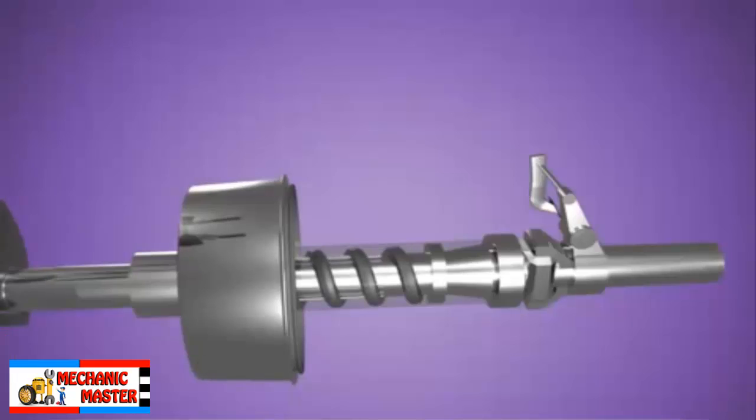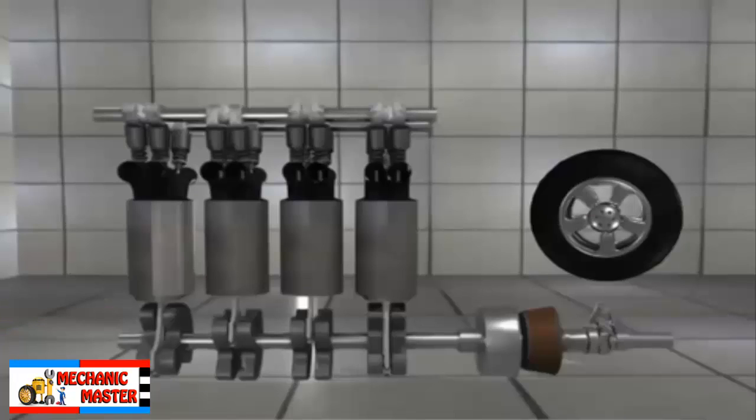The cone clutches are loaded by spring. Hence, the power is transmitted from the engine to the driving cone, driving cone to driven cone and driven to the gearbox and gearbox to rear wheel.